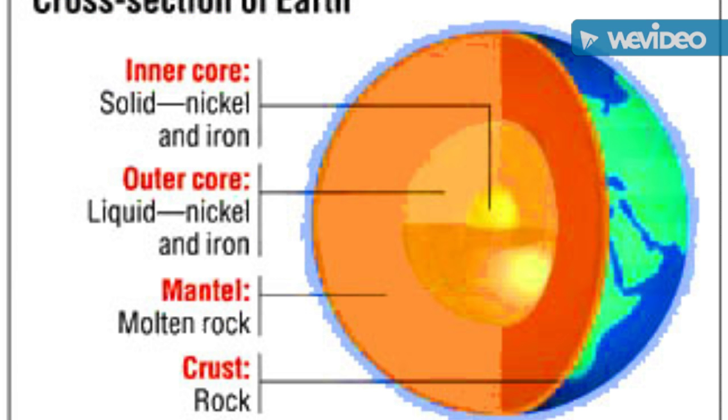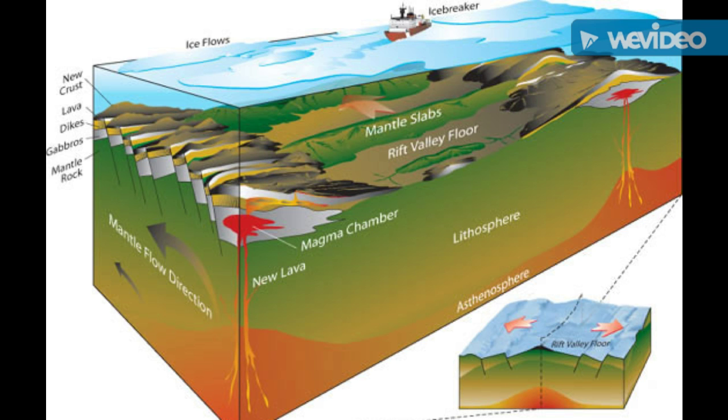There are eight elements that make up 98% of the Earth's crust. They are oxygen, silicon, aluminum, iron, calcium, potassium, sodium, and magnesium.